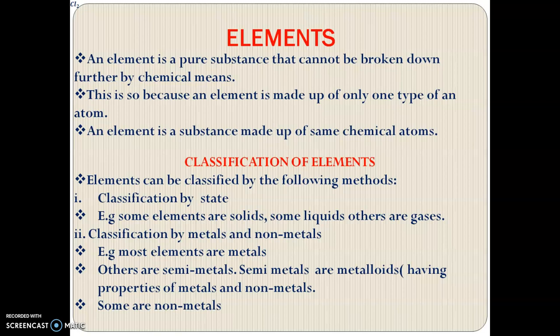Now there are about three ways in which you can classify elements. One of them is by classifying them in terms of state. The elements that are in gaseous state, others are in liquid state, then there are some which are in solid state. So by considering their states we can classify them. Another way is by considering some of them to be metals and non-metals. There are those which are metals, others are semi-metals, and then there are those that are non-metals. Examples — you get to look at them in the lessons we are going to look at in the nearby future.